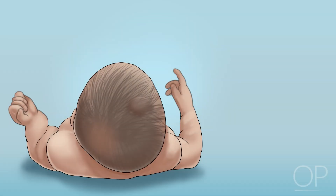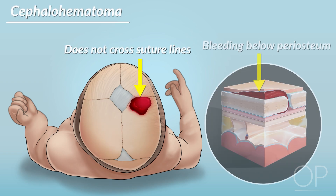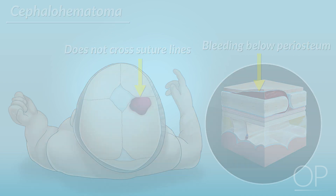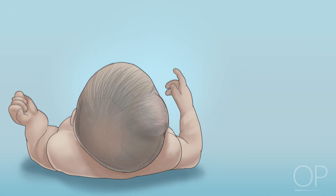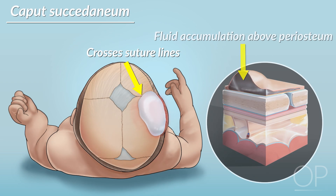Check the infant's skull for bruising and swelling. A bruise that doesn't cross the suture lines is called a cephalohematoma, which is caused by bleeding below the periosteum and is more common in births assisted by a vacuum or forceps. These infants are at increased risk of jaundice due to the breakdown of hemoglobin as the bruise resolves. If the swelling crosses suture lines, it is most commonly due to a caput succedaneum, a fluid accumulation that forms above the periosteum due to the force of delivery. The swelling typically resolves within a few days of birth.